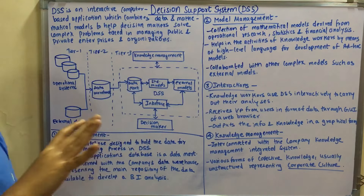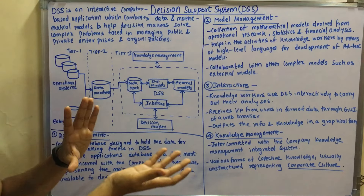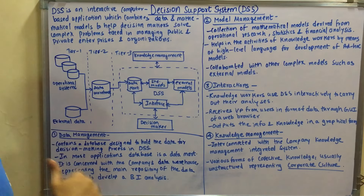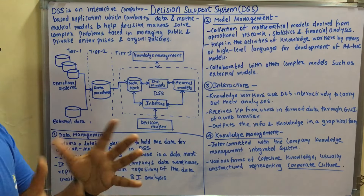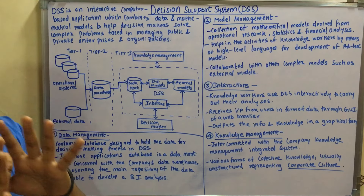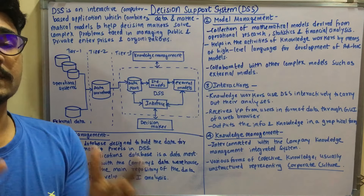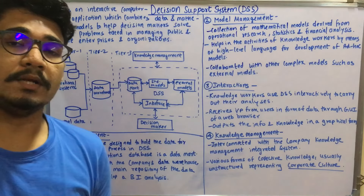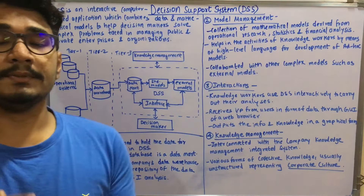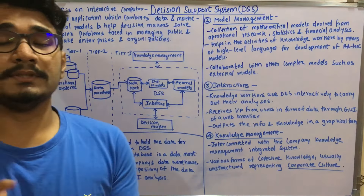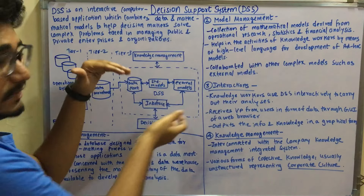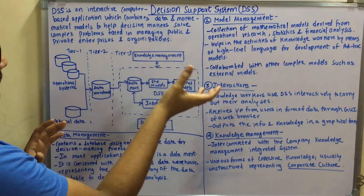It's like a tier change. Tier one remains the same where you have the operational systems as well as the external data. In tier two it's the data warehouse, which is maintained for a unified schema or for indexing. In tier three, in BI there were three components — logistics, marketing, performance evaluation and their perceived outputs and features. That component in DSS is replaced with the decision support system block.